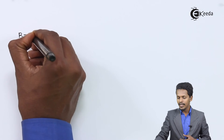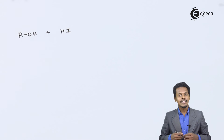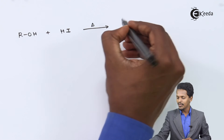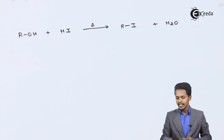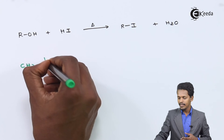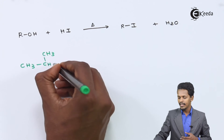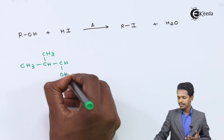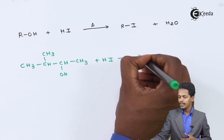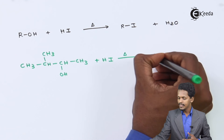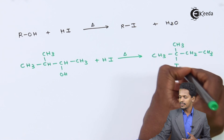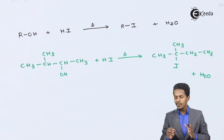Now we are going to talk about the reaction of an alcohol with hydrogen iodide (HI). The general reaction gives alkyl iodide along with H2O as a byproduct. For example, consider CH3C(CH3)(OH)CH2CH3 reacting with HI. The product obtained is CH3C(CH3)(I)CH2CH3 along with H2O.